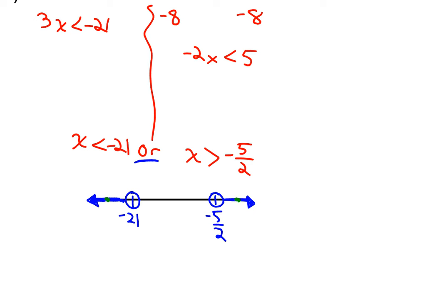Interval notation is just a lazy man's number line. For the first shaded region, the shading starts at negative infinity and ends at negative 21 — since it's not including negative 21, I put a parenthesis. The other shaded region starts at negative 5 halves, exclusive, so parenthesis, going all the way to infinity with a parenthesis. Because I have two different solution sets, it's the first solution set united — or union — with the second: negative infinity to negative 21, union negative 5 halves to infinity, all exclusive.